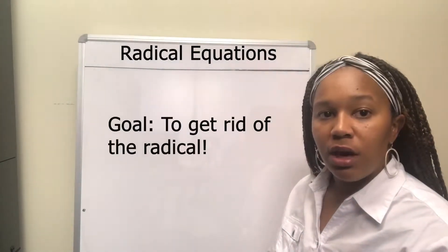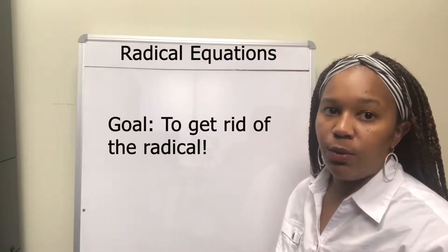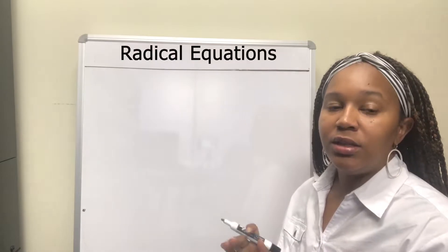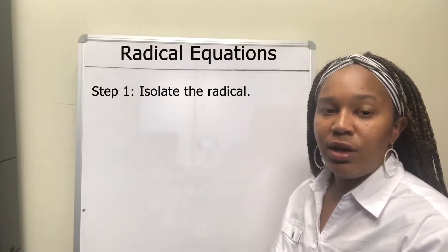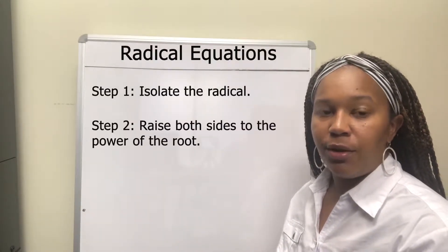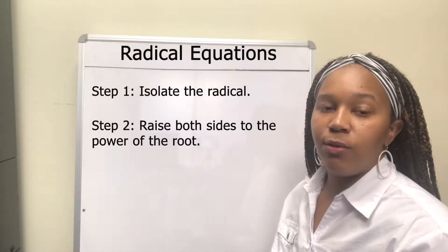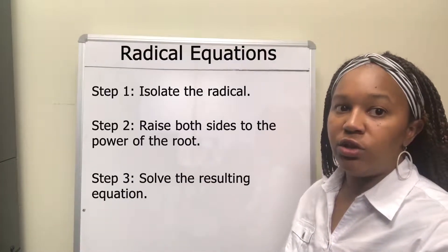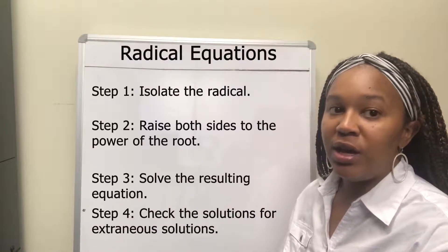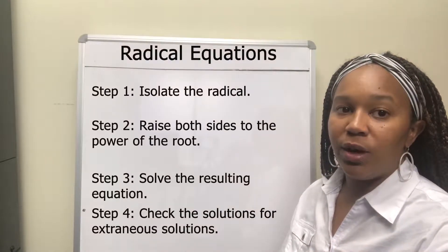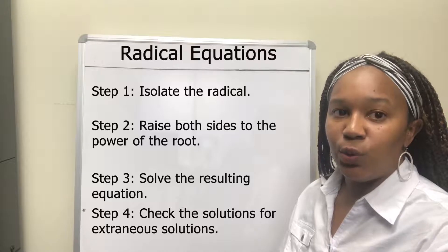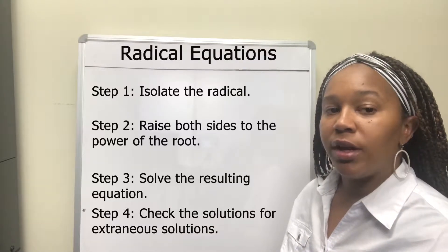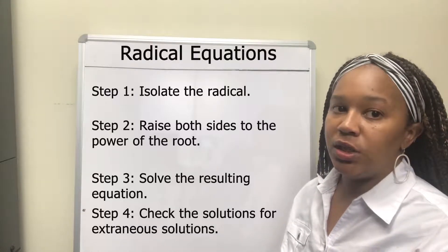The goal in solving a radical equation is to get rid of the radical. But before you can get rid of the radical, you have to isolate it. So you'll isolate the radical, then get rid of it by raising both sides to the power of the radical, and then solve the resulting equation. The only thing extra is you have to check your answers, because you can get what's called extraneous solutions — it works out as a solution, but when you plug it back in, it doesn't work.